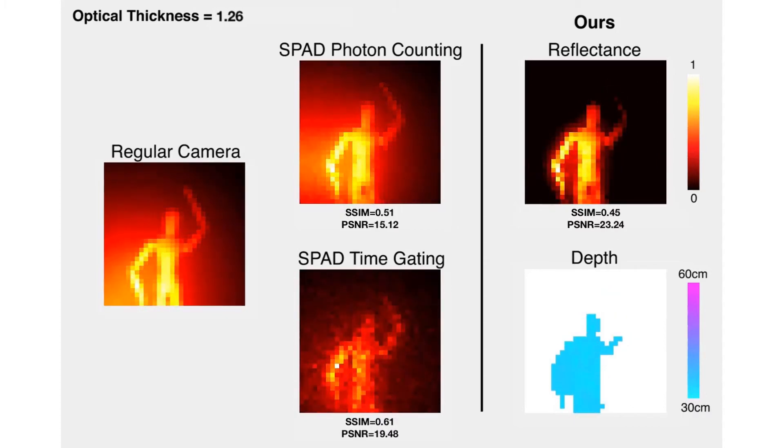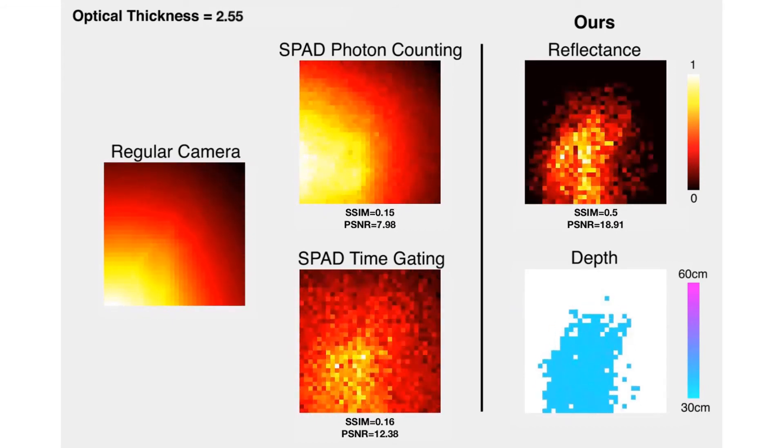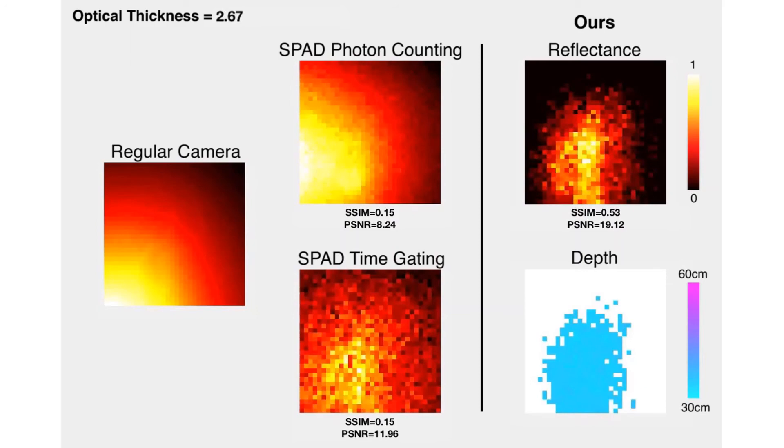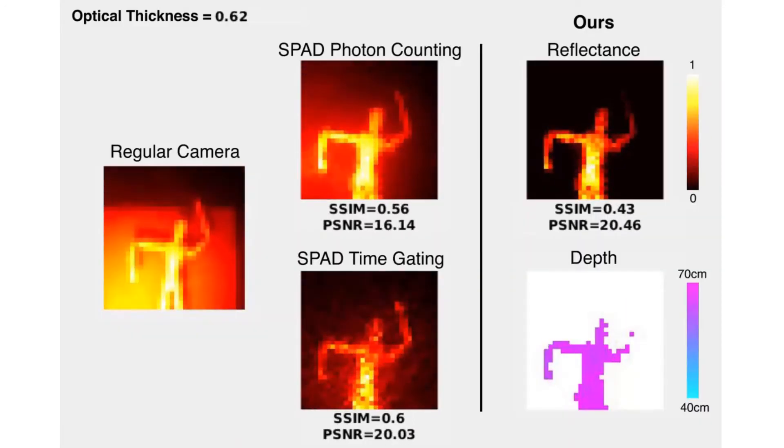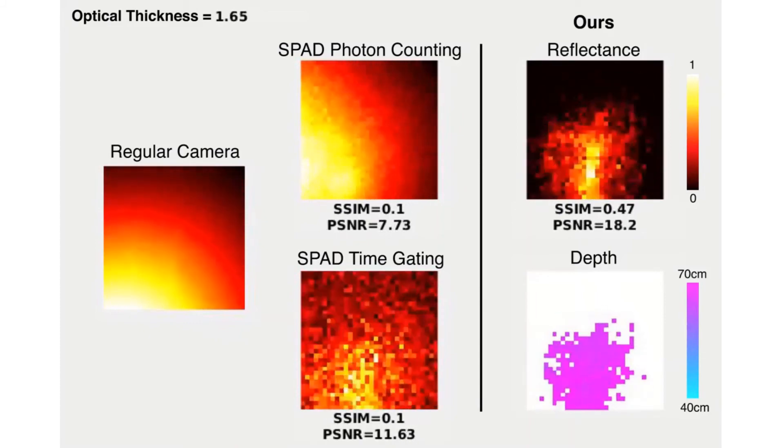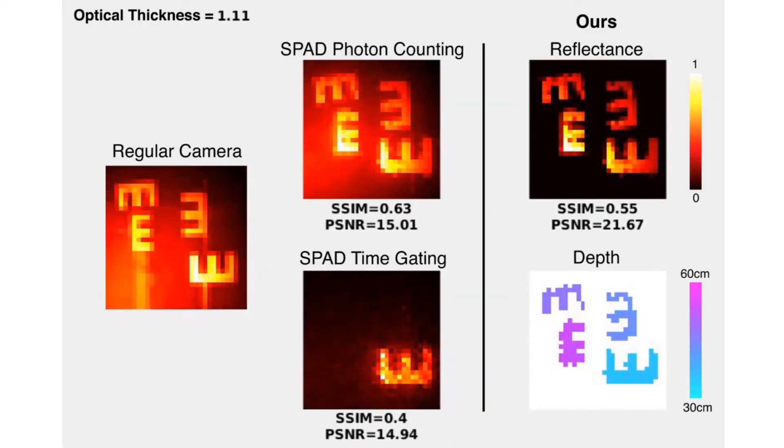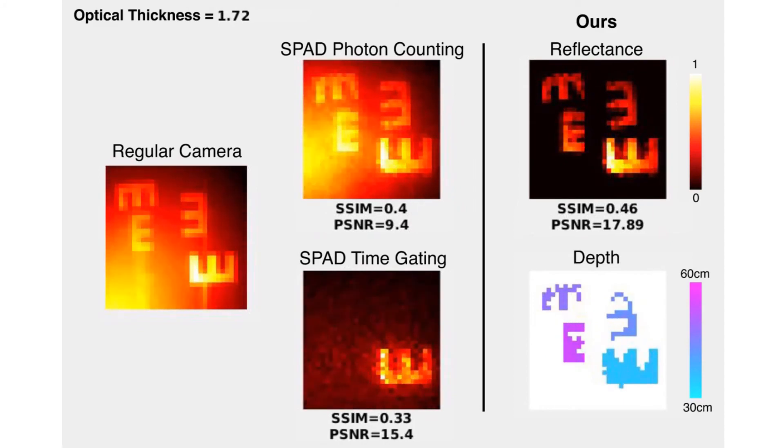In this case, the target is a mannequin placed 35 cm away from the camera. Here is another result with a mannequin 65 cm away from the camera. And here is a target composed of E shapes at different orientations and distances.